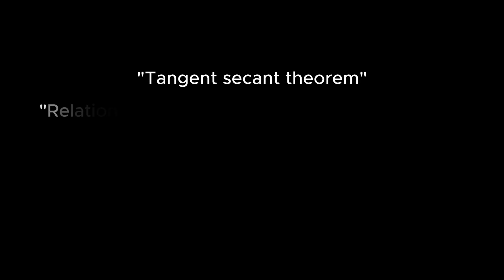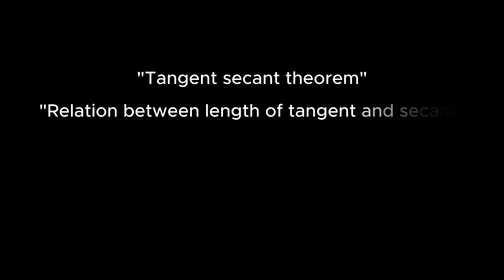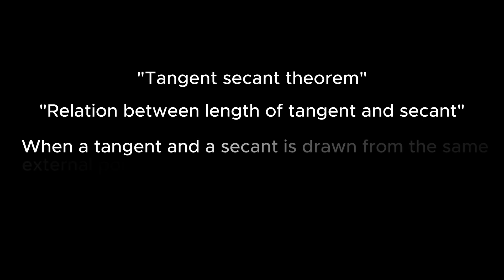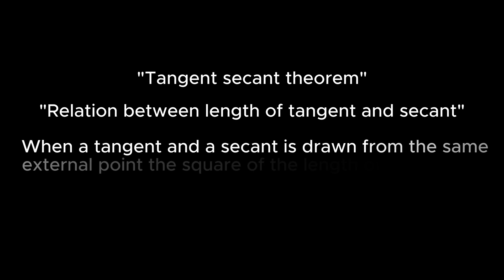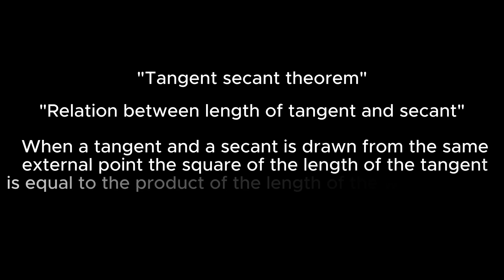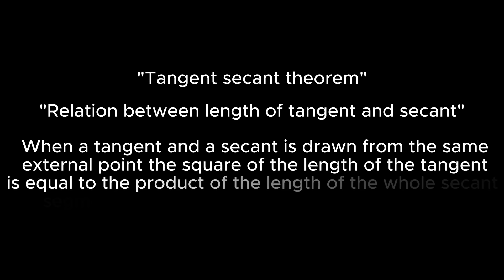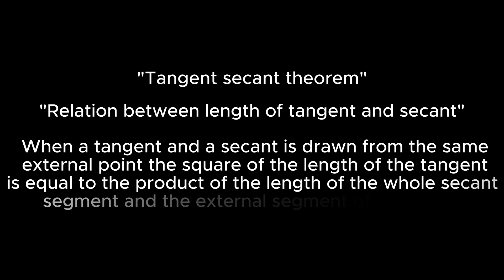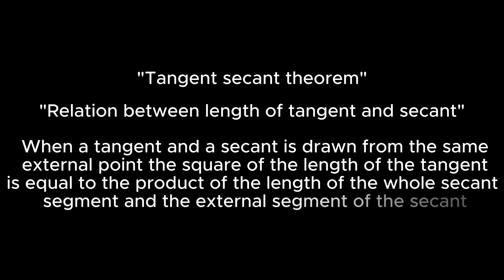The next theorem is the Tangent-Secant Theorem. This theorem establishes the relationship between the length of the tangent and secant of a circle. The theorem states that when a tangent and a secant are drawn from the same external point, the square of the length of the tangent is equal to the product of the length of the whole secant segment and the external segment of the secant.